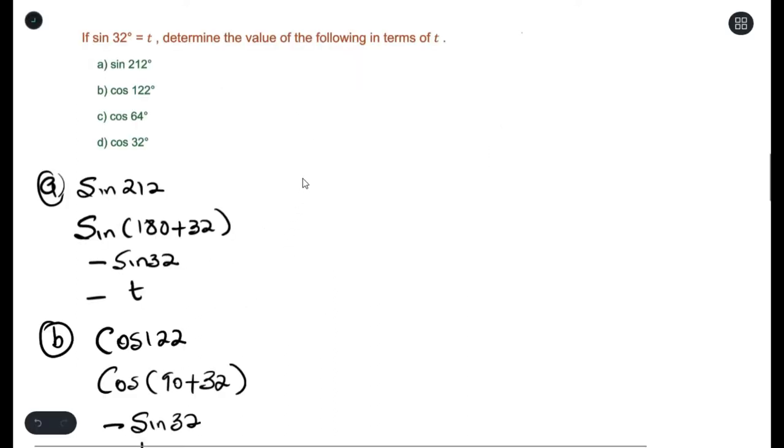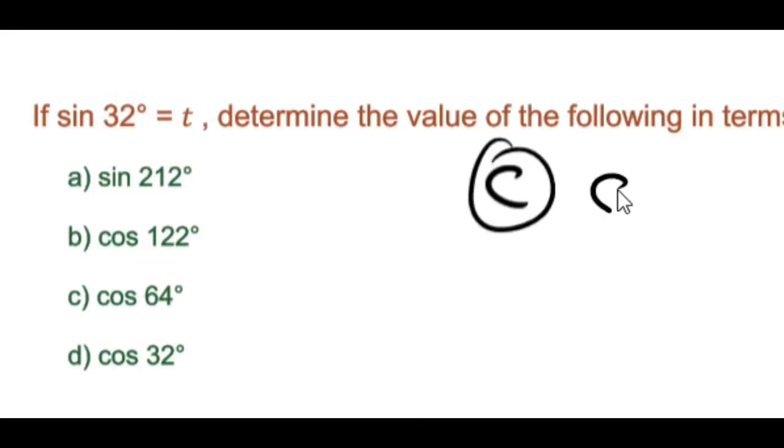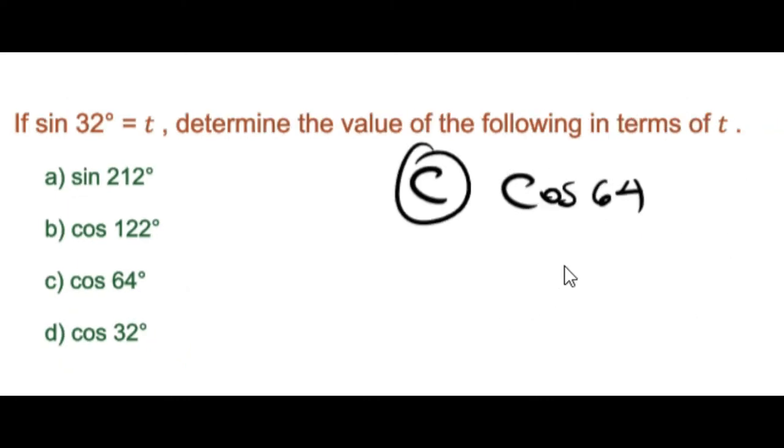For part c, cos 64°. One thing to notice when answering c is 64° is double of 32°, which should remind you of double angle identity.